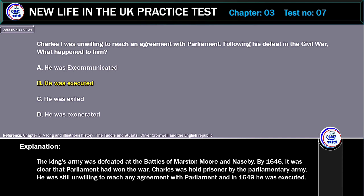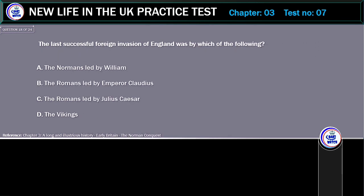Explanation: The king's army was defeated at the Battles of Marston Moor and Naseby by 1646. It was clear that Parliament had won the war. Charles was held prisoner by the Parliamentary Army. He was still unwilling to reach any agreement with Parliament and in 1649 he was executed.